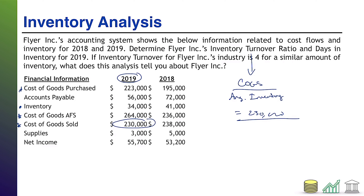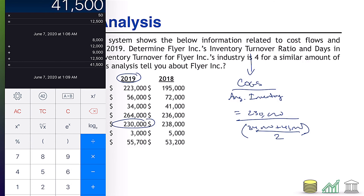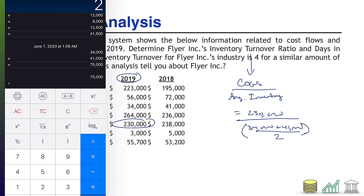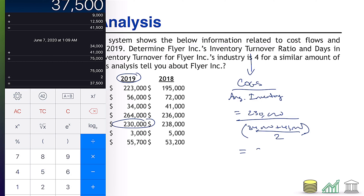For average inventory, the problem also gives us supplies — that's irrelevant here and can be ignored, just like cost of goods purchased and available for sale. We use the inventory figures: $34,000 this year and $41,000 last year. So average inventory = ($34,000 + $41,000) / 2 = $37,500. That goes in the denominator: $230,000 over $37,500.